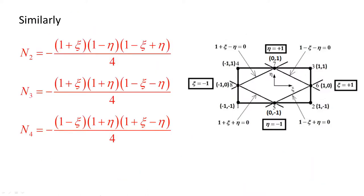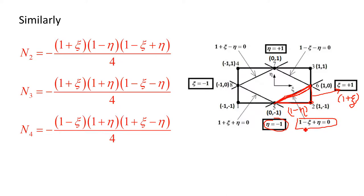For shape function N2: node 2 connects to the right vertical edge (xi = +1), giving bracket (1 + xi); the lower horizontal edge (eta = −1), giving bracket (1 − eta); and the inclined line whose equation is 1 − xi + eta = 0, giving bracket (1 − xi + eta). So N2 = −(1/4)(1 + xi)(1 − eta)(1 − xi + eta).